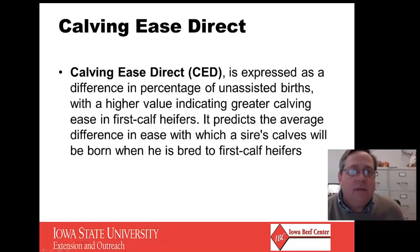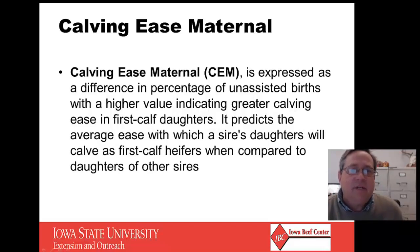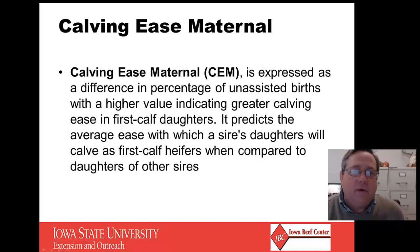Calving ease direct is the percentage of unassisted births — a higher number means less calving difficulty or increased calving ease in first calf heifers. It predicts the average difference in ease with which a sire's calves will be born when bred to first calf heifers, so higher numbers are good on calving ease direct. Calving ease maternal looks at those young cows and heifers — what will be the amount of unassisted births they're going to have? Higher value means greater calving ease. If you're going to keep back replacement females from these genetic choices, then calving ease maternal is an important trait.